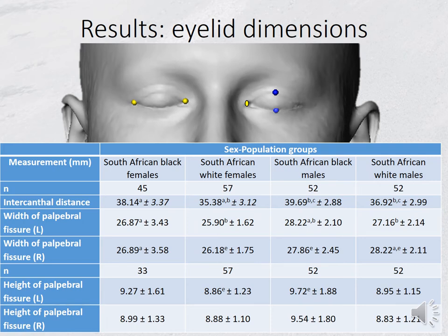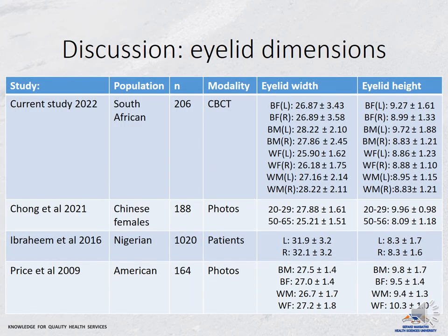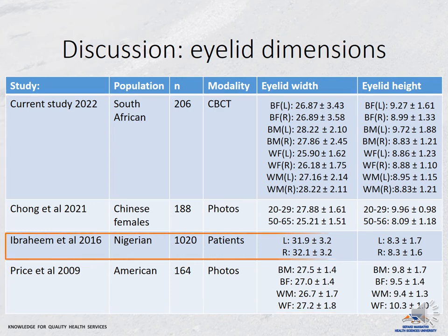The height and width of the palpebral fissure were calculated to comment on its dimensions in a South African sample. Females have narrower palpebral fissures compared to males, but no statistically significant difference was noted in the height of the palpebral fissure among sex and ancestral groups. A significant difference was observed in the intercanthal distance between white South Africans, but not between sexes in the black South African group. The fissure width in our South African black and white population groups corresponded with the average fissure width in black and white Americans, although the height of the American group was generally greater. Nigerian patients presented with the widest palpebral fissure widths and the smallest palpebral fissure heights.